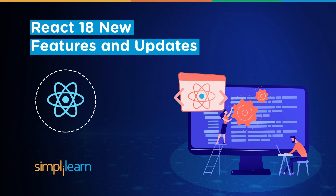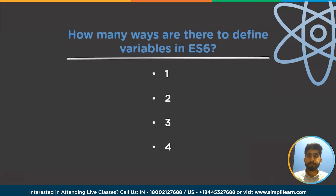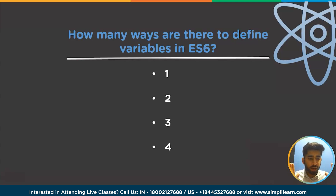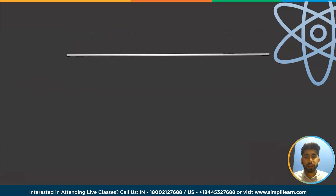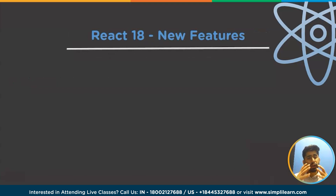Now I'm going to ask you one question: how many ways are there to define variables in ES6, which is ECMAScript? Pause this video and answer in the comment section below. The answer is three — the three variable declarations in ECMAScript 6 are var, let, and const. Moving ahead, we'll see the new features introduced in React 18.